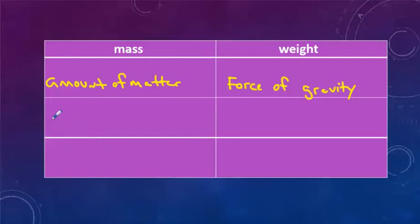Mass is measured in kilograms, whereas weight is measured in the unit newtons, which we give the symbol capital N.